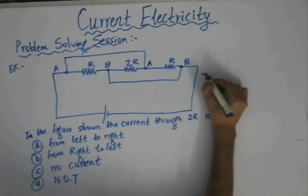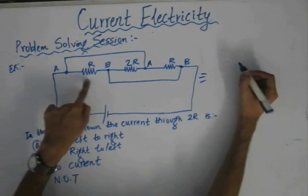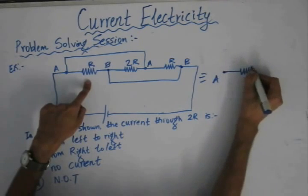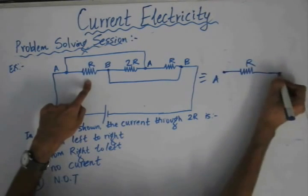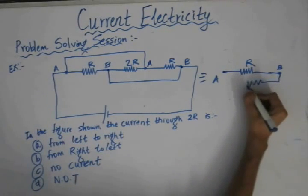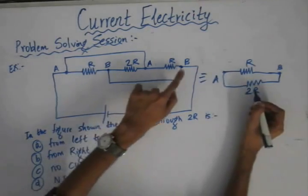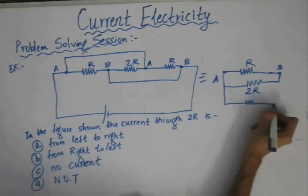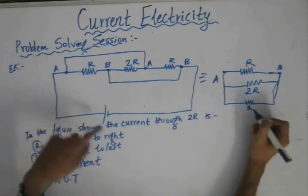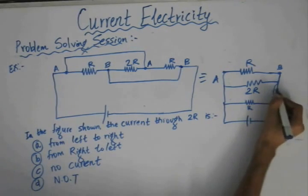The equivalent diagram shows that from point A to B we have a resistor R, from B to A there is a resistor of 2R, and from A to B again we have a resistor of R. This combination is connected to a battery.